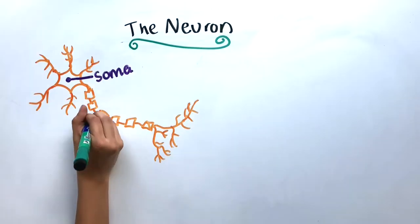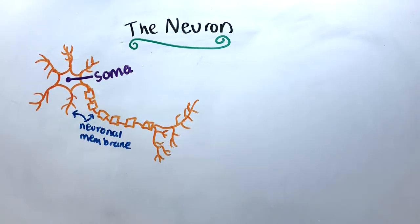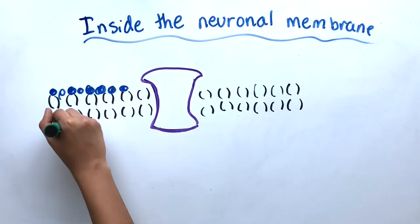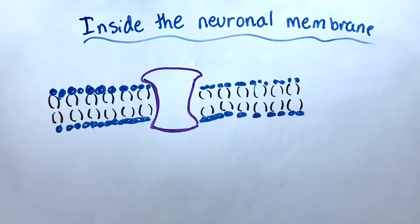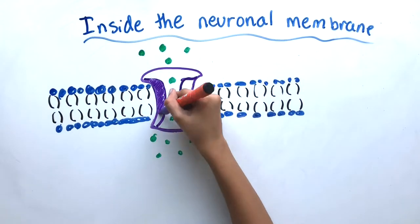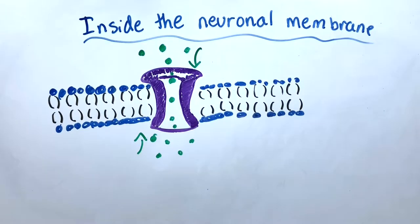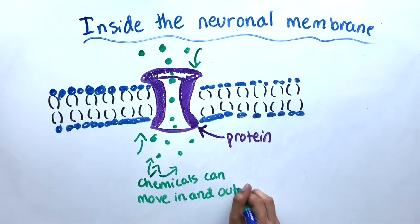The neuronal membrane is the barrier that encloses the neuron and performs one of the neurons' most defining actions, transmitting action potentials. The proteins on this barrier pump substances in and out of the neuron, allowing electrical signals to pass through the brain and the body.